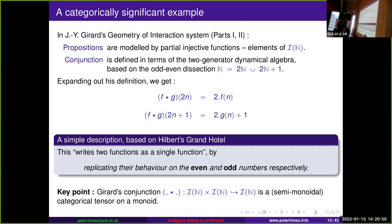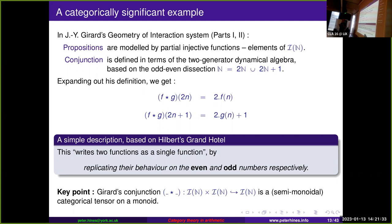Expanding his definition — it takes a bit of work — what happens is: for f * g (his conjunction), we replicate the behavior of f on the even numbers and the behavior of g on the odd numbers. It's kind of like Hilbert's hotel but for functions instead of numbers. The key point is that this is a categorical tensor on a monoid — a semi-monoidal tensor. We don't have a unit object, but we have all the other conditions for a categorical tensor.